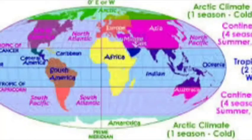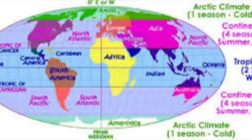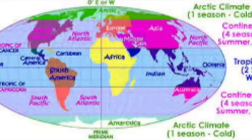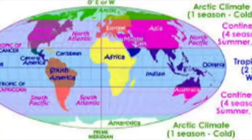Similarly, in the South, the Antarctic Circle at 66 and a half degrees South to the Tropic of Capricorn at 23 and a half degrees South lies within the Temperate Zone. The portion between the Tropic of Capricorn and the Antarctic Circle is known as the South Temperate Zone.